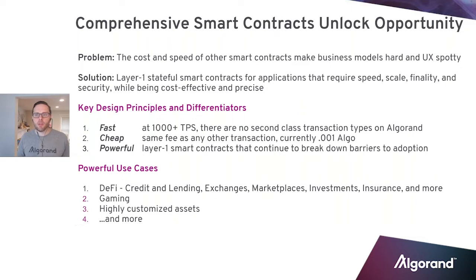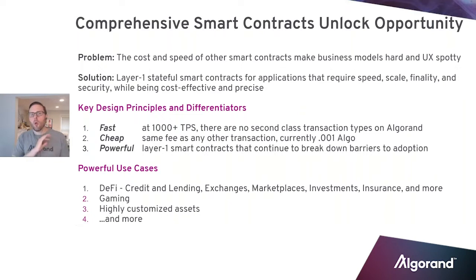So what are the key design principles here? Number one, they're fast. There are over a thousand transactions a second. There are no second-class transactions on Algorand. Whatever transactions you're sending get to take advantage of that super highway underneath. Everything runs at the same speed.